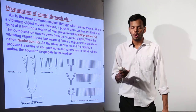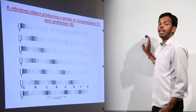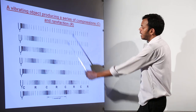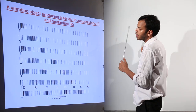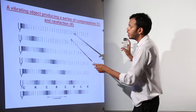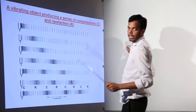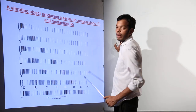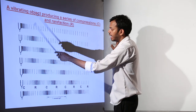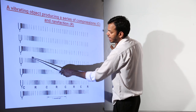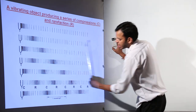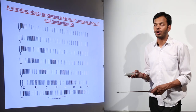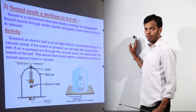We should prove whether sound actually travels in a medium. First, note that a vibrating object produces a series of compressions and rarefactions. Starting from the tuning fork which was struck and started vibrating — it produced a compression, followed by a rarefaction, then compression again, then rarefaction, and so on. This is how sound travels forward: compression, rarefaction, compression, rarefaction, and so on.